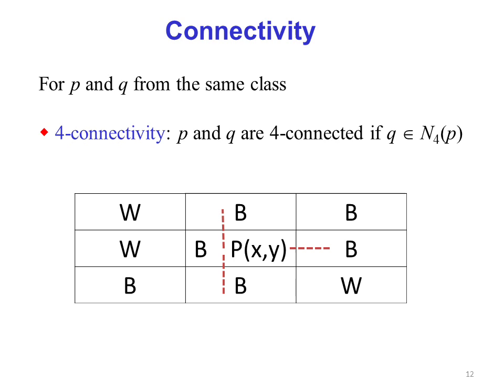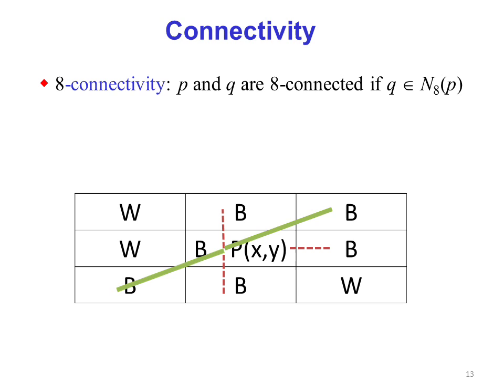For 8-connectivity, p and q are said to be 8-connected if q is in N₈(p). Those pixels which are connected through green line and red line come under 8-connected neighborhood.